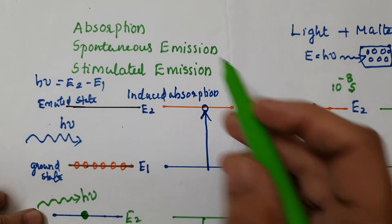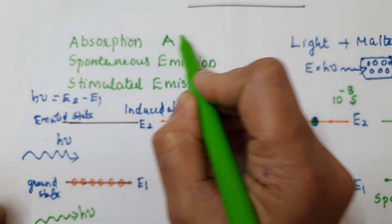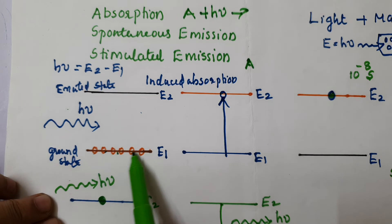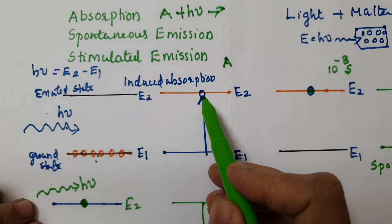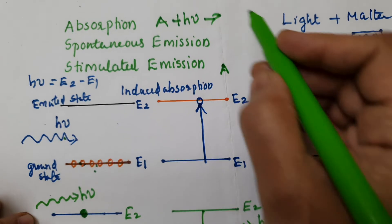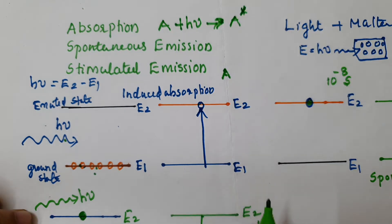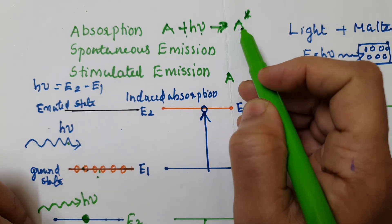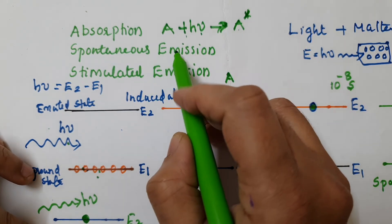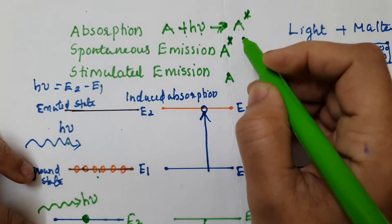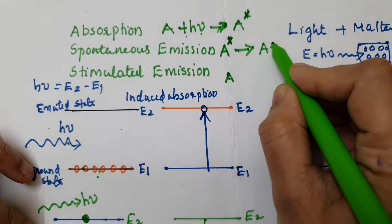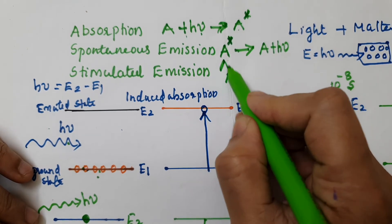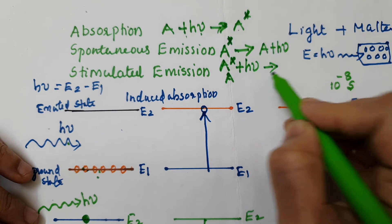We can represent these processes symbolically. For absorption: A + hν → A* (where A* is the excited atom). For spontaneous emission: A* → A + hν. For stimulated emission: A* + hν → A + 2hν. This shows that stimulated emission produces two photons from one.